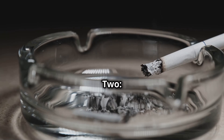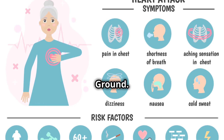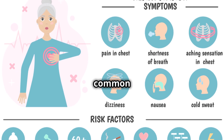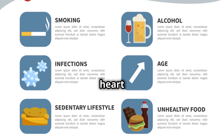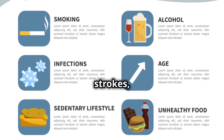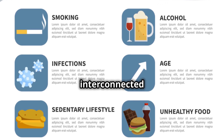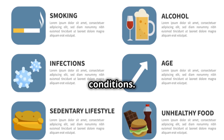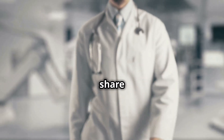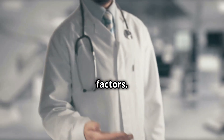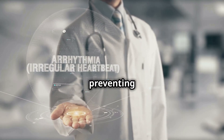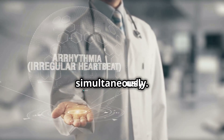Section 2: Shared Risks — The Common Ground. In this section, we will explore the common risk factors that contribute to both heart attacks and strokes, highlighting the interconnected nature of these serious health conditions. Heart attacks and strokes often share common risk factors, and understanding these shared risks can help in preventing both conditions simultaneously.